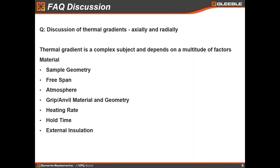There are a lot of factors that go into controlling the thermal gradient in a Glebal sample. The first is sample geometry — is it a compression or tension sample? Six millimeter, ten millimeter, plane strain? All those will affect the thermal gradient. The material will affect the thermal gradient because it affects both the electrical and thermal resistivity, which have big components in the thermal gradient. The free span that you use, the atmosphere — vacuum, inert gas, or air — will have a big role as well. Obviously, the grips and anvil material, the heating rate, and any external insulation on the sample also matter.